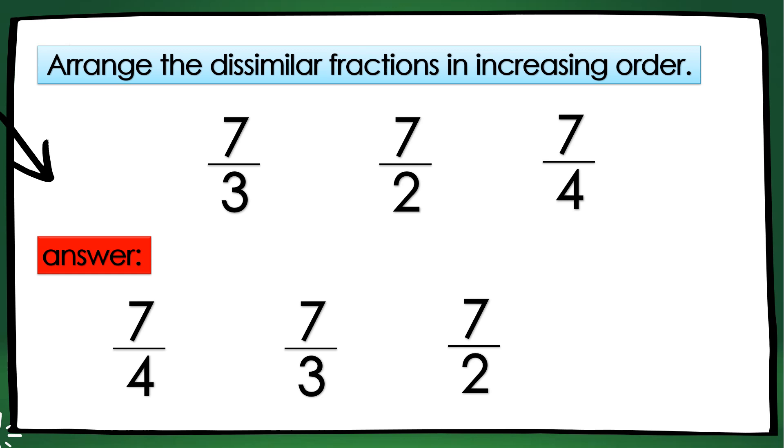So, we have, remember, 7/3, 7/2, 7/4. They have the same numerators. Again, we will take a look at the denominators. So, 4 is greater than 3, and 3 is greater than 2. Now, since we will arrange these dissimilar fractions in increasing order, the answer is 7/4, 7/3, and then 7/2.